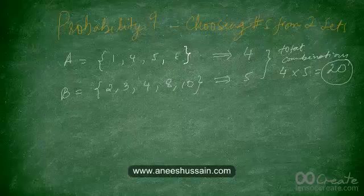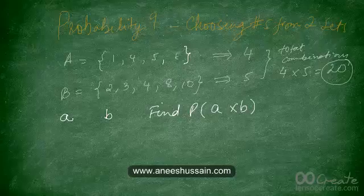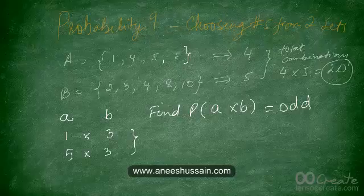Using the same data, select a number from set A randomly — call it small a — and a number from set B — call it small b. The question says: find the probability that A multiplied by B is an odd number. Think about which combinations will result in an odd product, and hit pause before viewing the explanation.